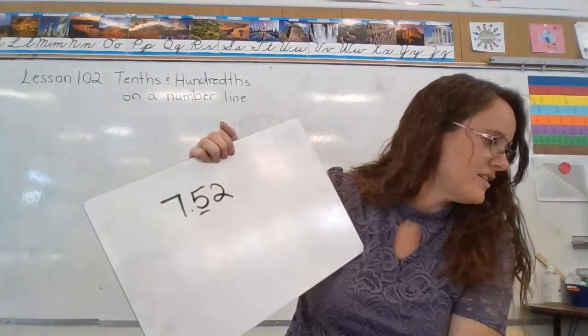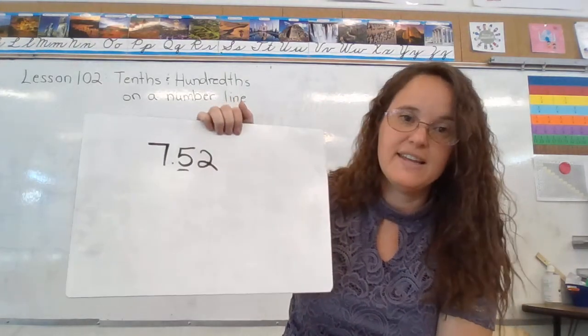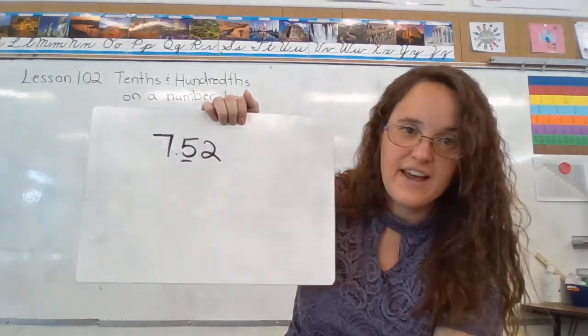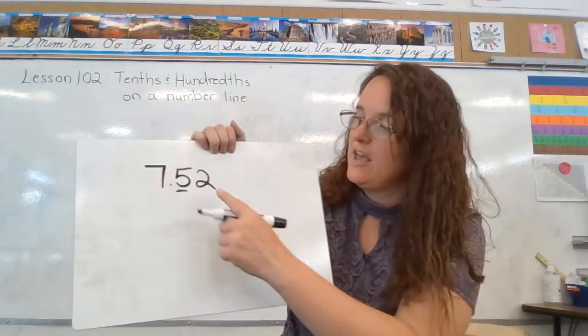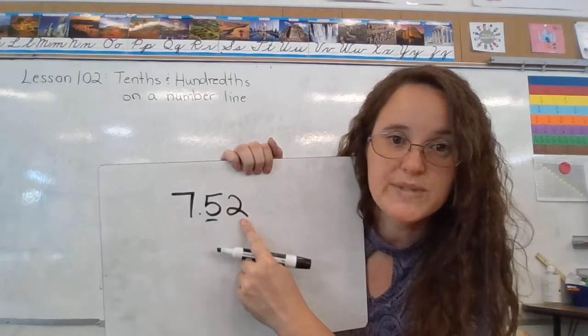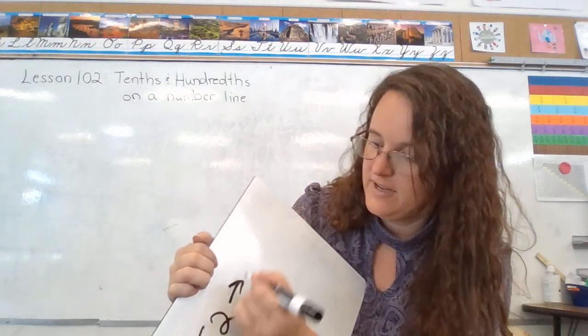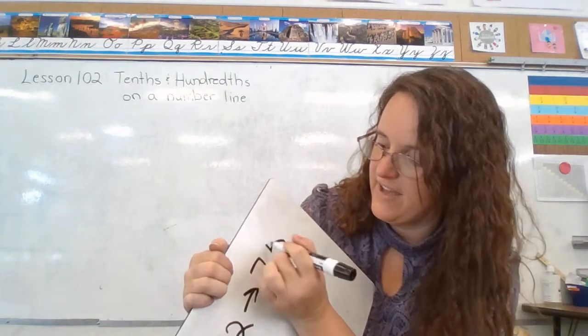and in fact, it's on example 2. 7 and 52 hundredths is between 7 and 5 tenths and 7 and 6 tenths. We're going to follow the same rule. 2 is less than 5, so we round down to 7 and 5 tenths.